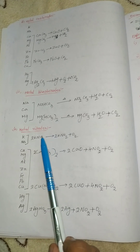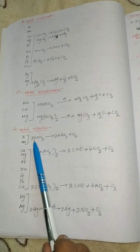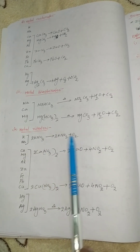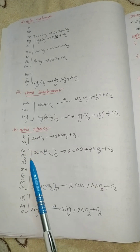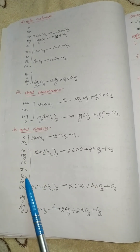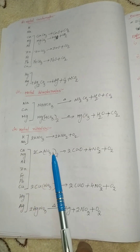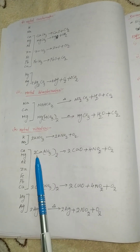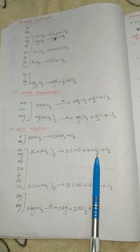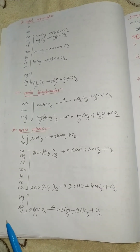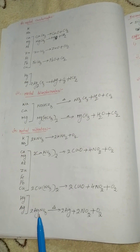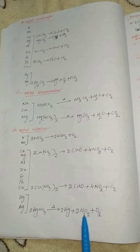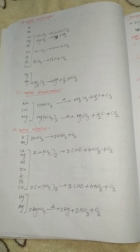Next: metal nitrates. Ca(NO3)2 decomposes to form Ca(NO2)2 plus oxygen. For calcium, magnesium, aluminium, zinc, ferrous, lead, and copper nitrates — for example calcium nitrate decomposes into calcium oxide plus nitrogen dioxide plus oxygen. For mercury and argentum — for example AgNO3 decomposes into argentum plus nitrogen dioxide plus oxygen.